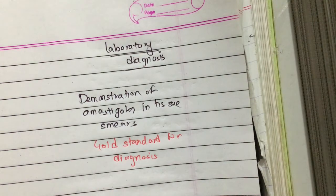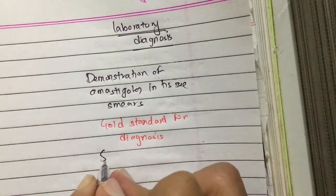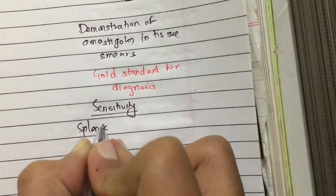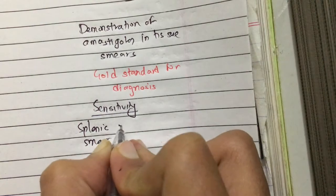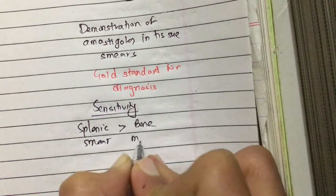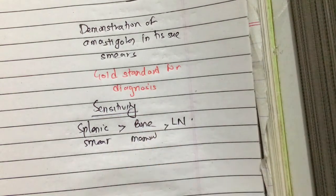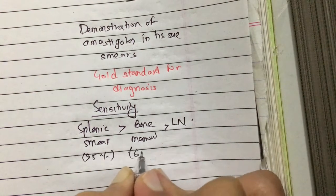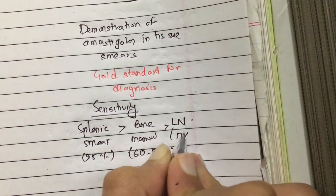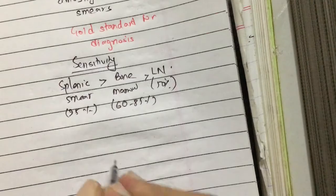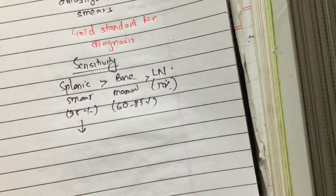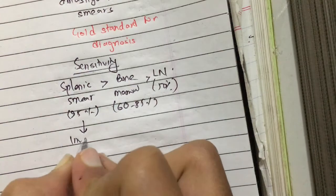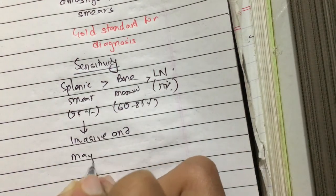Regarding the sensitivity of different tissue smears: splenic smear has the highest sensitivity at 95%, bone marrow is 60 to 85%, and lymph node is 50%. However, the process of taking the splenic smear is invasive and it can be very dangerous in untrained hands.